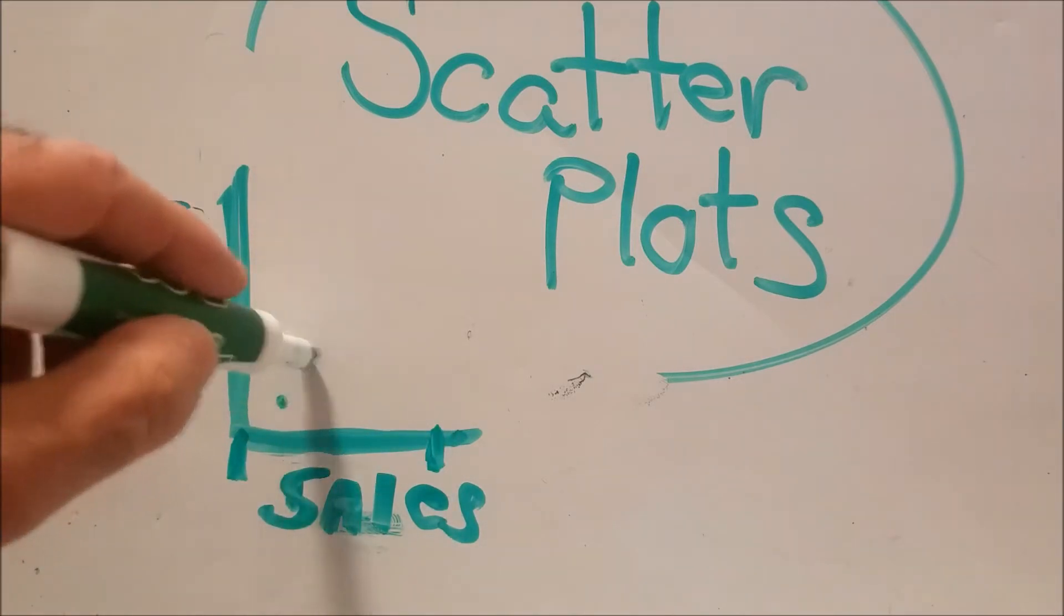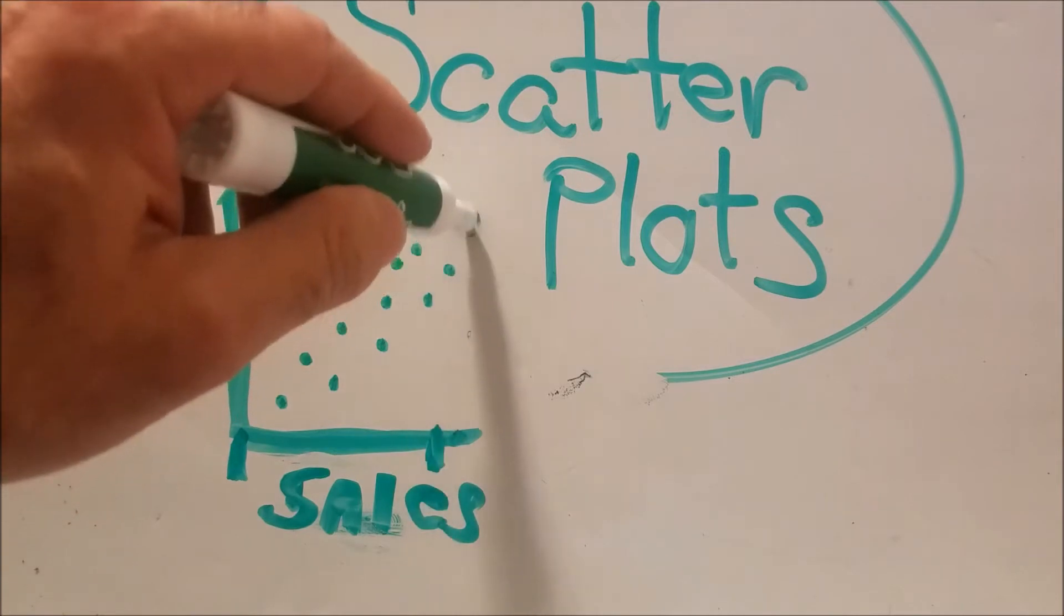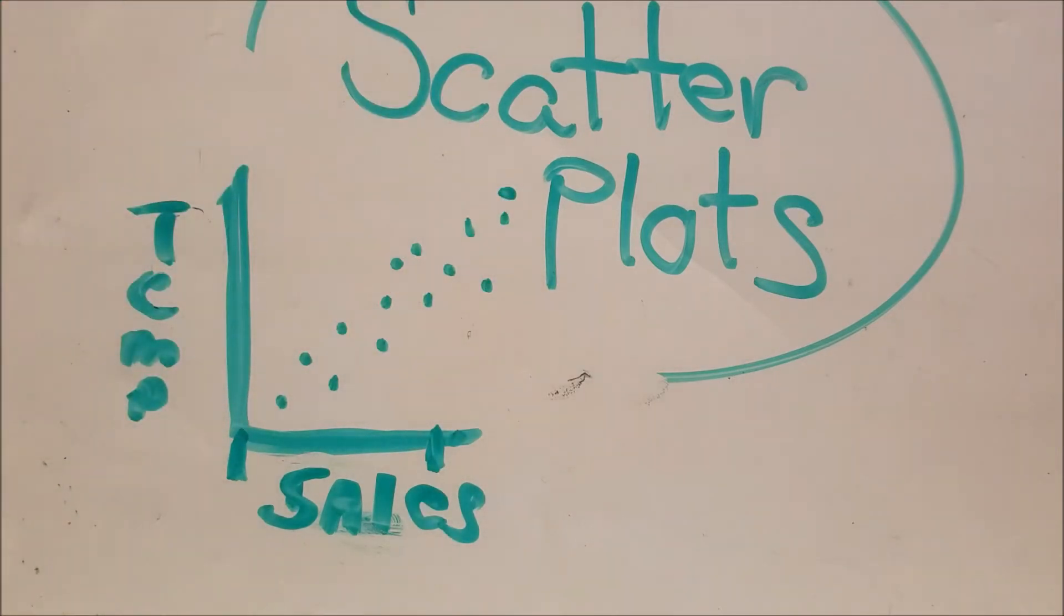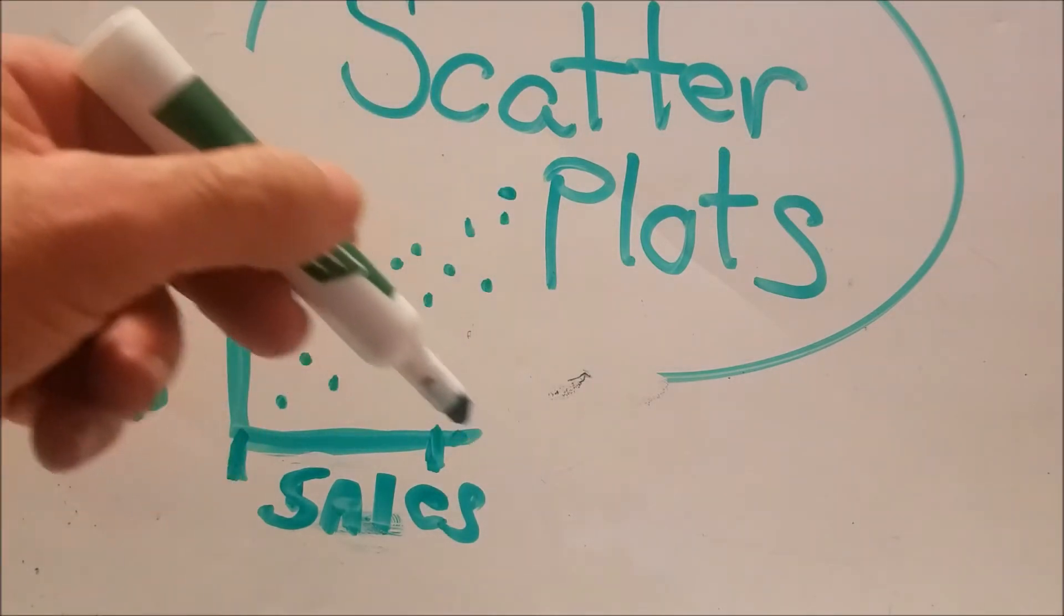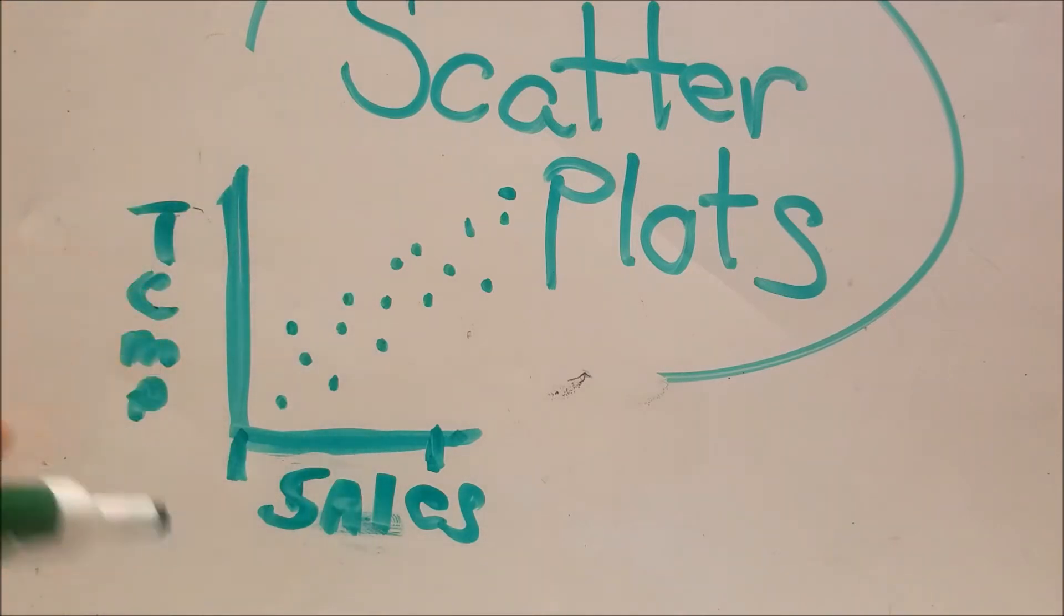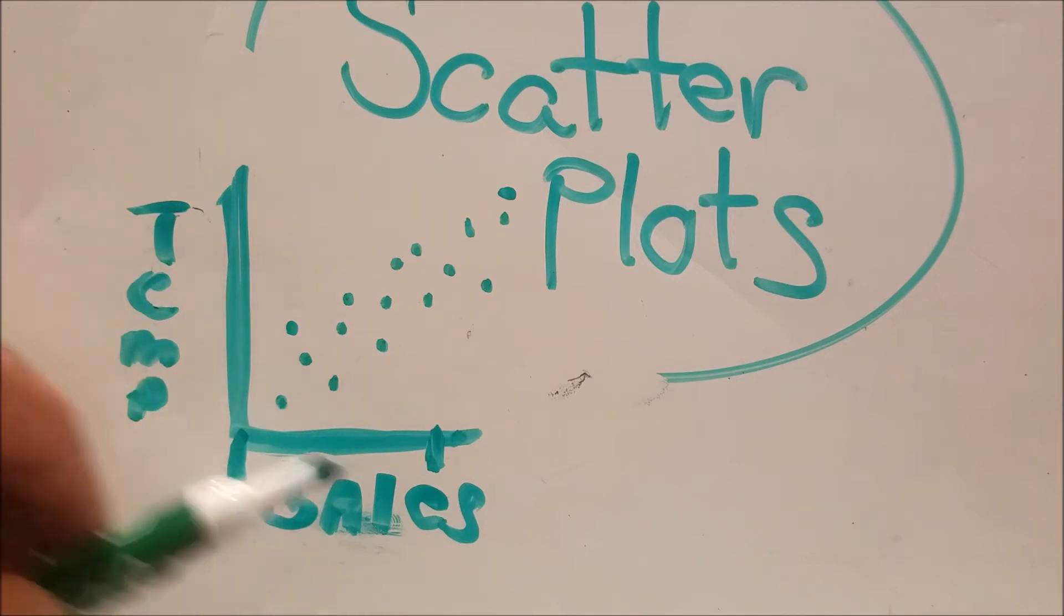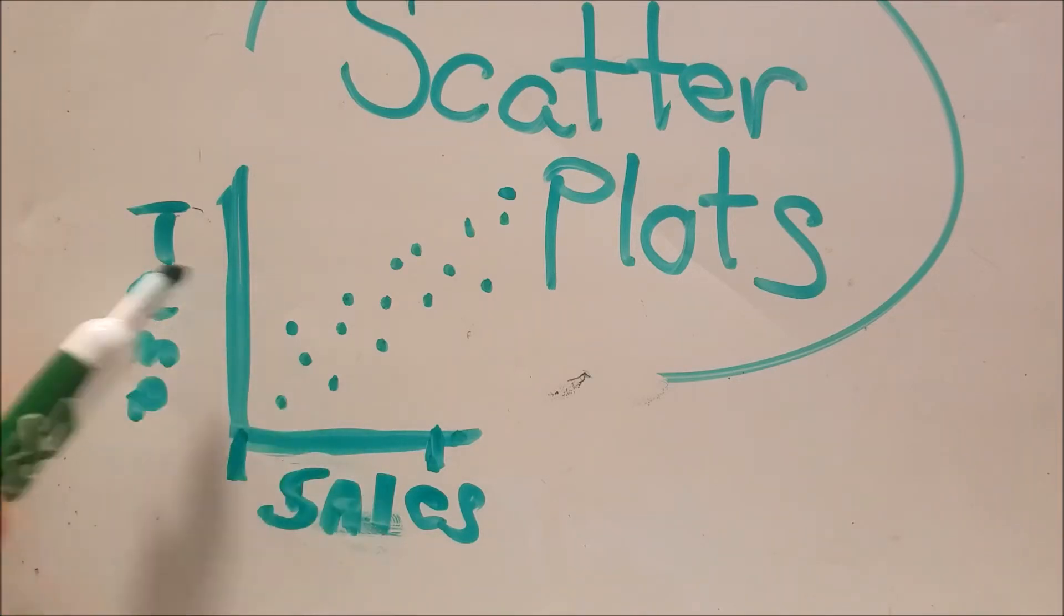We should see stuff like this. We should see sales like this, right? We shouldn't see sales going the other way. Well, it's possible, but we shouldn't. We're just predicting. We're assuming that ice cream sales and temperature has a relationship. The hotter it is, we should see more people buying ice cream.